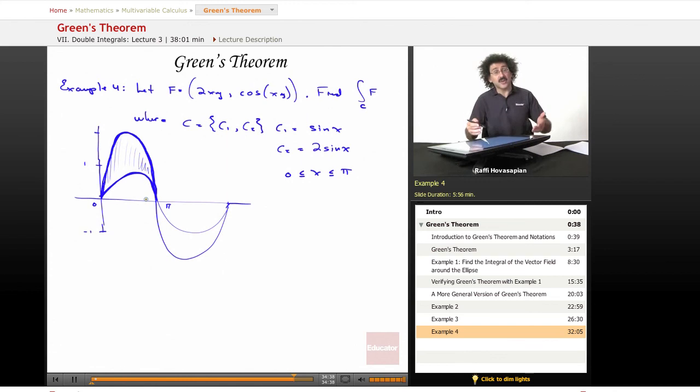So instead of doing the line integral, we're going to use Green's theorem, and we're going to integrate this vector field over the area enclosed by that path. That's what we're doing. Okay. So let's go ahead and just work it out.